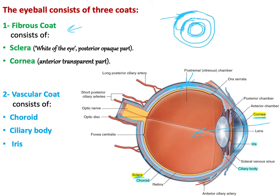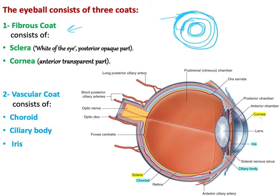The cornea and sclera together form the fibrous coat. Now moving to the second, intermediate coat — the vascular coat. Starting posteriorly, it contains the choroid, which is a very vascular structure. The choroid continues as a pyramid-shaped structure called the ciliary body.